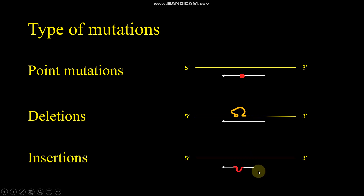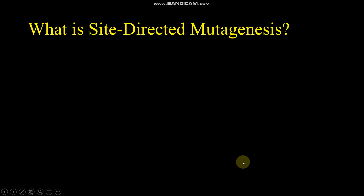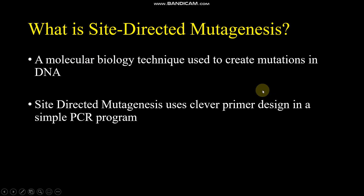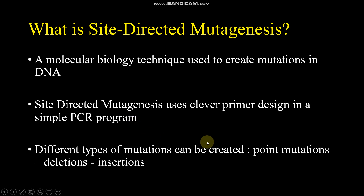We can also create insertions by adding a piece of DNA to our primer. After the PCR, this piece will be incorporated in the template DNA. To recap: site-directed mutagenesis is a molecular biology technique used to create mutations in DNA. It uses clever primer design in a simple PCR program. Different types of mutations can be created, like point mutations, deletions, and insertions.